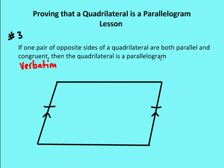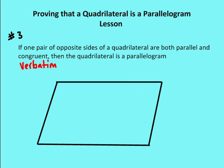Number three: if one pair of opposite sides of a quadrilateral are both parallel and congruent, then the quadrilateral is a parallelogram. Note here that it does not work if I have one pair of sides that are congruent and a different pair of sides that are parallel. So if I have one side that's congruent and the other side that's parallel, it doesn't necessarily work — because if I draw this line here and say that this is parallel, I now have an isosceles trapezoid, and I don't have a parallelogram.